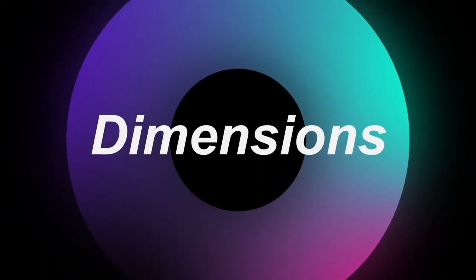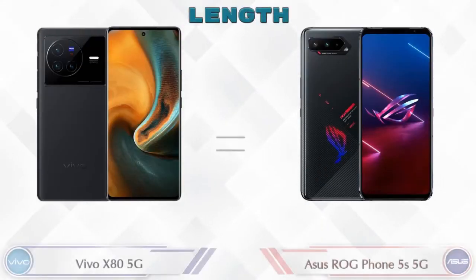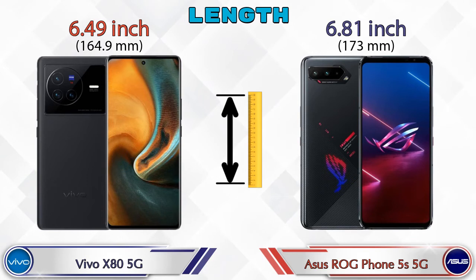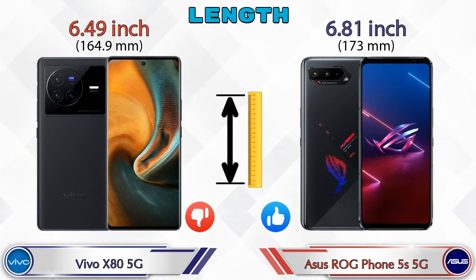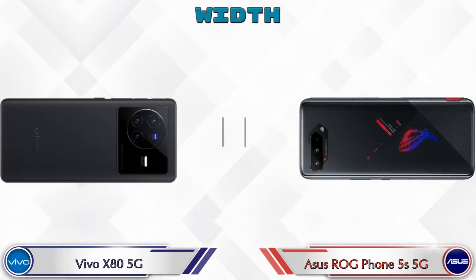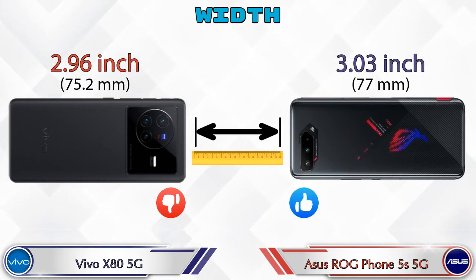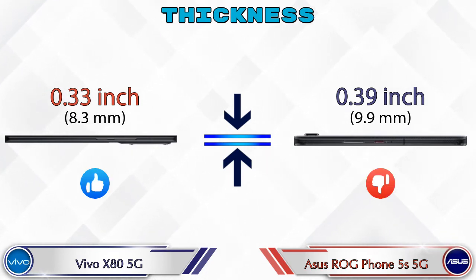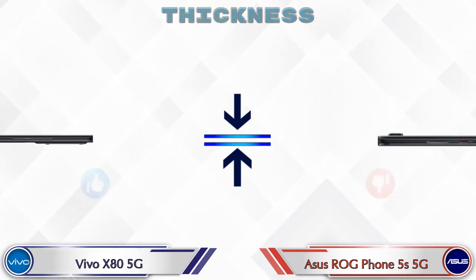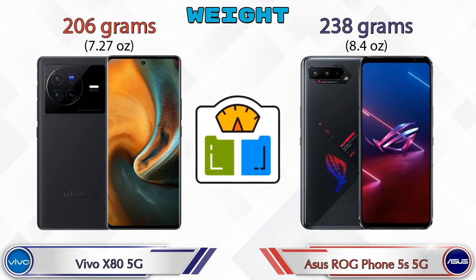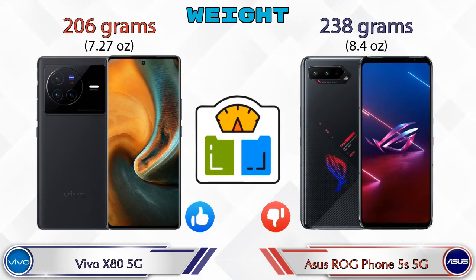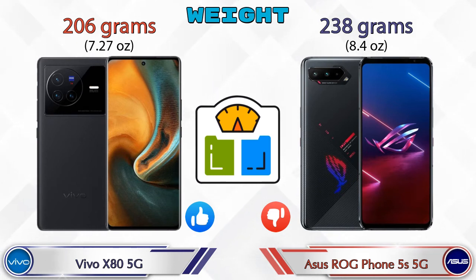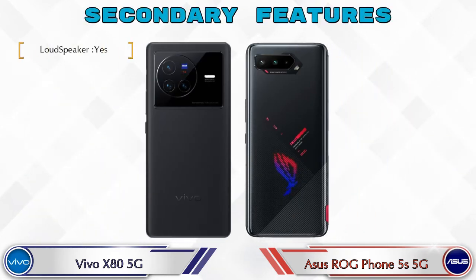For dimensions, the Vivo X85G has a length of 6.49 inches while the ROG Phone 5S 5G is 6.81 inches. The width of the Vivo X85G is 2.96 inches versus 3.03 inches for the ROG Phone 5S 5G. The Vivo X85G is thinner at 0.33 inches compared to 0.39 inches for the ROG Phone 5S 5G. In terms of weight, the Vivo X85G is 206 grams while the ROG Phone 5S 5G is heavier at 238 grams.